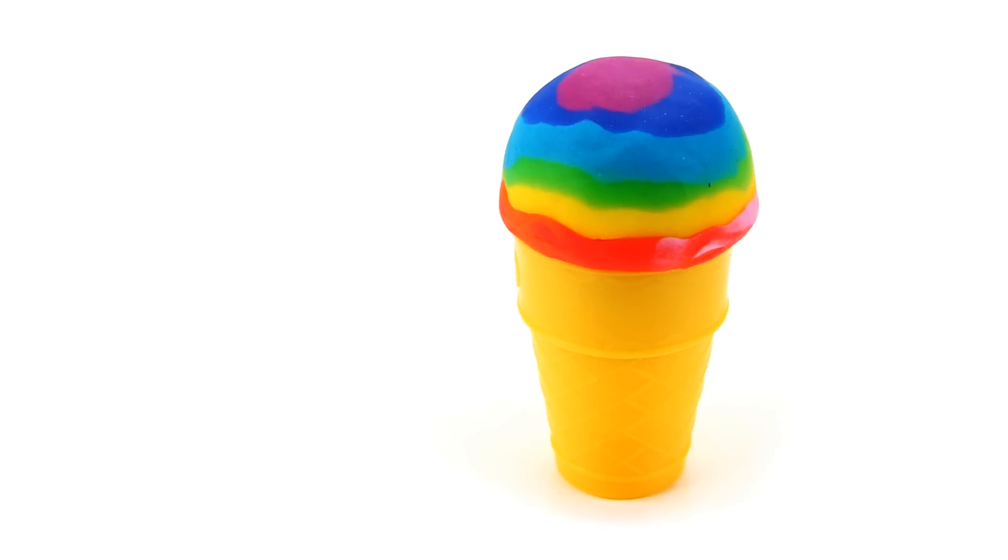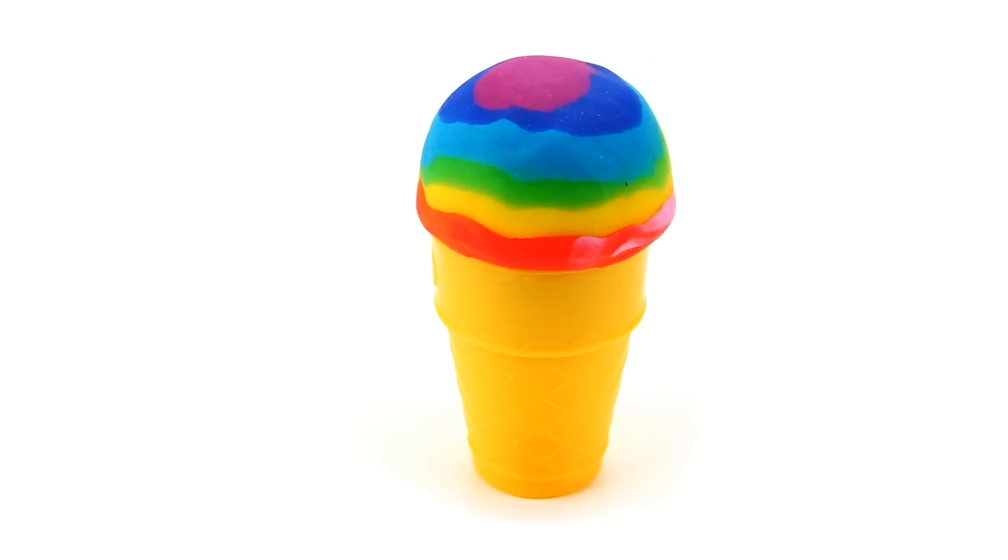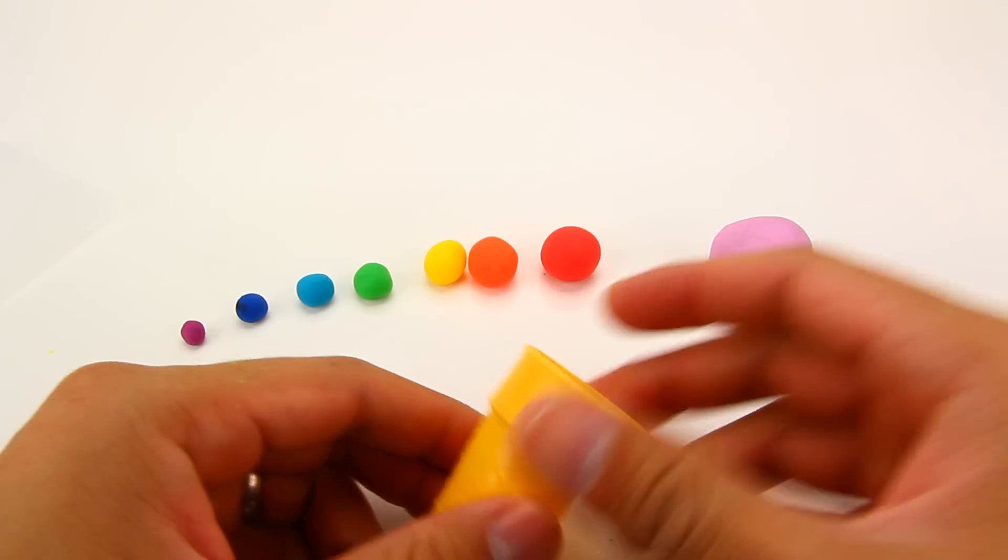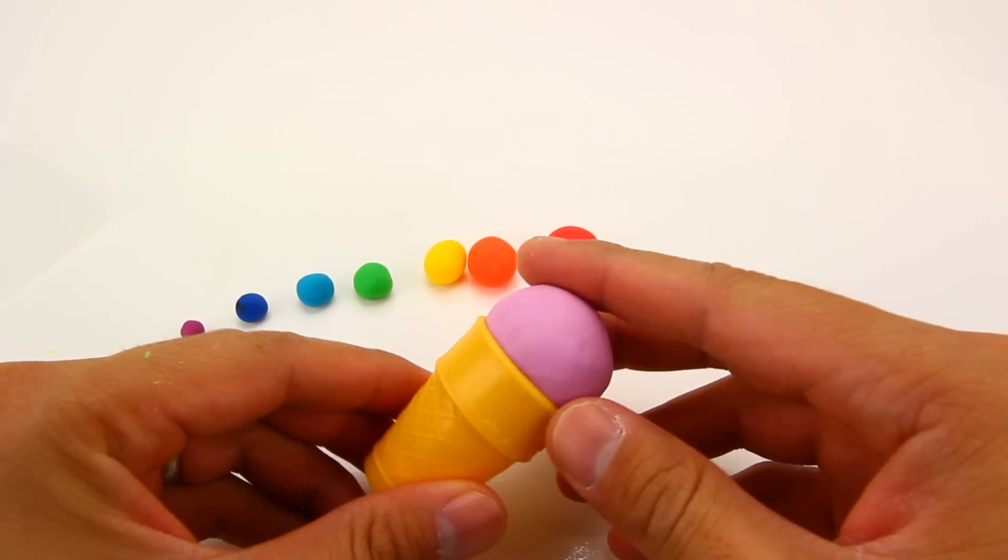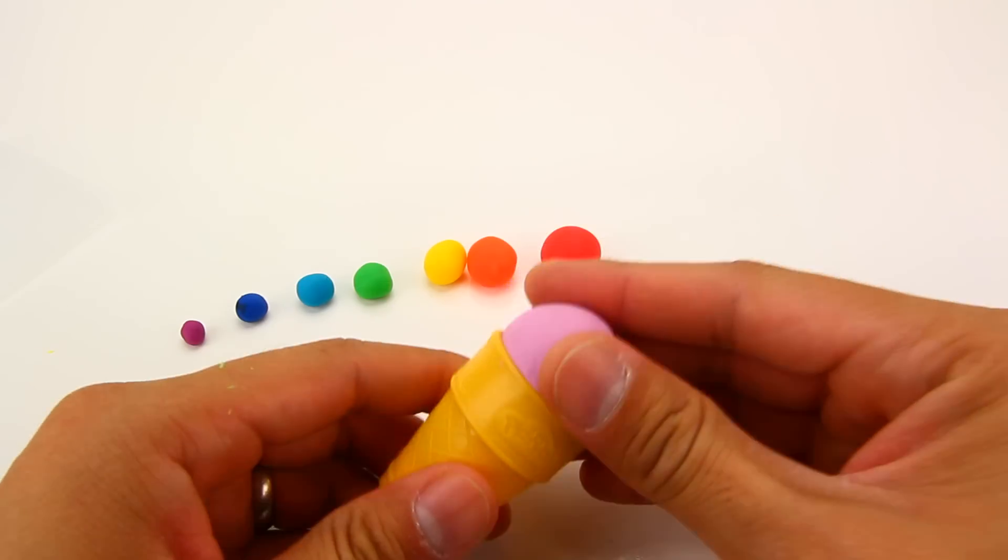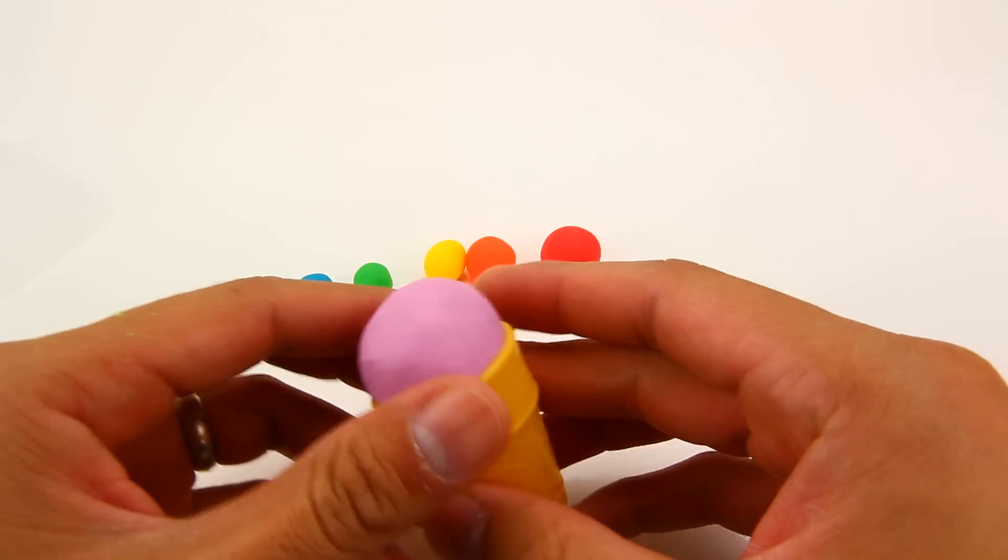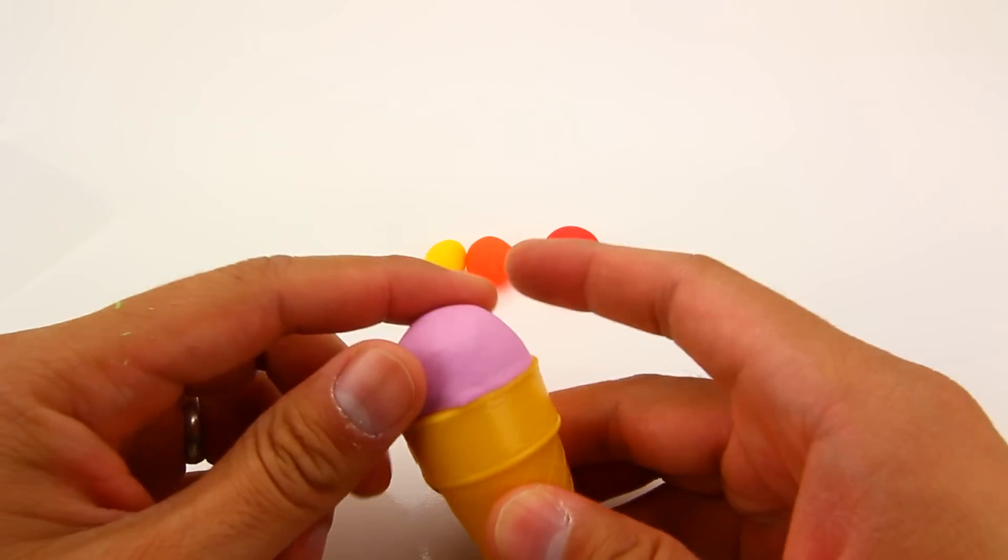Hi everyone, it's Wishi Ball and this is the rainbow ice cream. I'm going to start off with my cone and put any color play-doh inside as a scoop of ice cream. I chose this light purple.